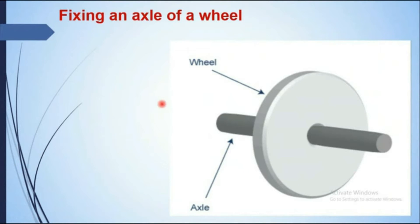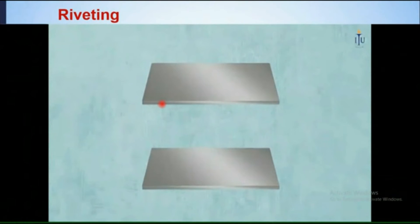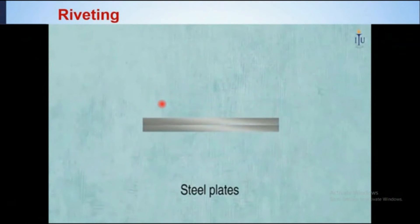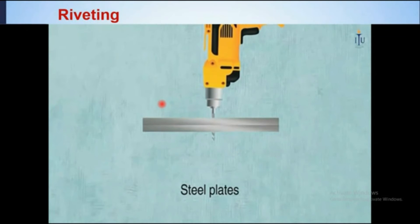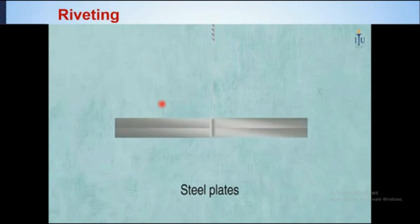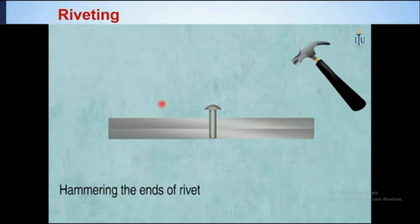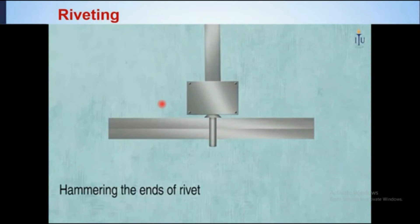Another application of expansion and contraction of solids is riveting. Two metallic plates are brought near to each other, and by using a drill machine a hole is bored in both plates. Then a red hot rivet is inserted into the hole of the plates, and by using a hammer both ends of the rivet are flattened.